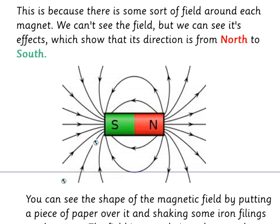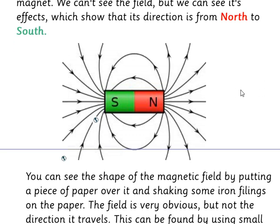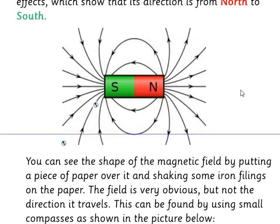This is because there's some sort of field around each magnet. We call this a magnetic field. We can't see the field, but we can see its effects, which show its direction from North to South. You can see the field by putting a piece of paper over it and shaking some iron filings on the paper. The field is very obvious, but not the direction.